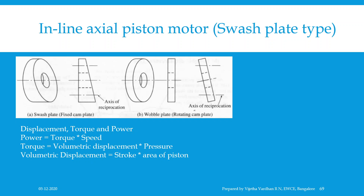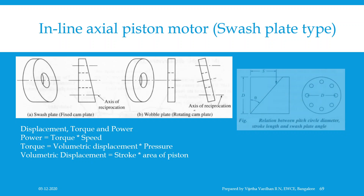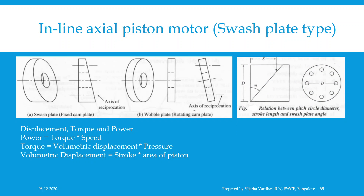In the case of axial piston motors, the stroke length s is a function of d (the pitch circle diameter) and the offset angle theta. From the figure, tan θ = s/d, so s = d × tan θ. For a given axial piston motor, the pitch circle diameter d is fixed; hence the stroke length is directly proportional to tan θ, that is, to θ. Therefore, the volumetric displacement Vd is directly proportional to the swash plate angle θ, as can be observed in the figure.